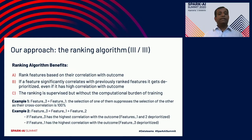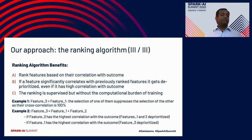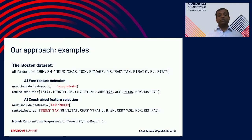The benefit of our ranking algorithm: features are ranked by correlation with outcome, but if a feature significantly correlates with a previously ranked feature, it gets de-prioritized — even if it has high correlation with the outcome. The ranking is supervised without the computational burden of training. For example, if feature three is highly correlated with feature one, the selection of one will be suppressed since both give the same benefit. If feature three correlates with both feature one and two, the third one gets de-prioritized because of the high correlation.